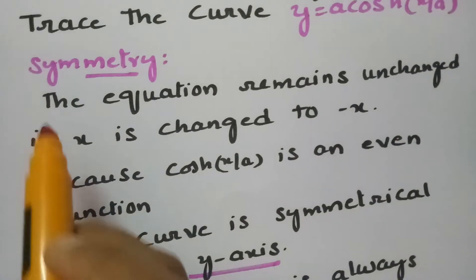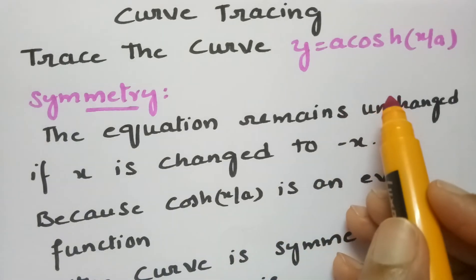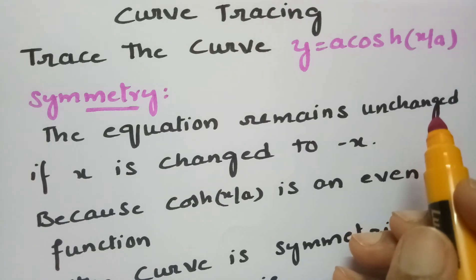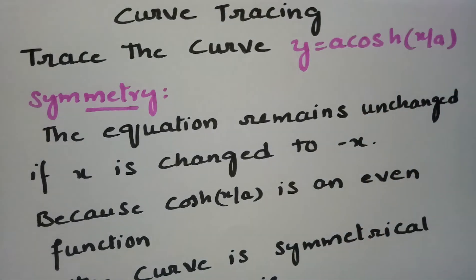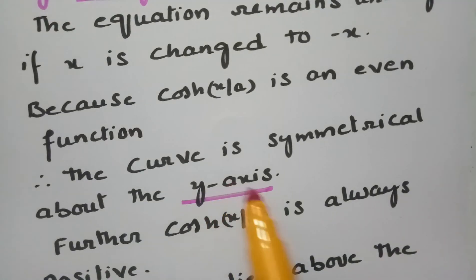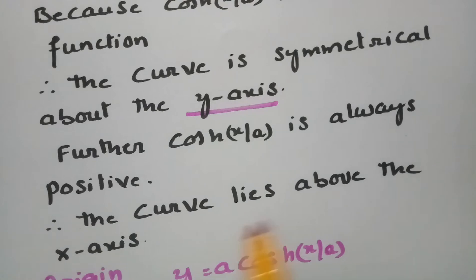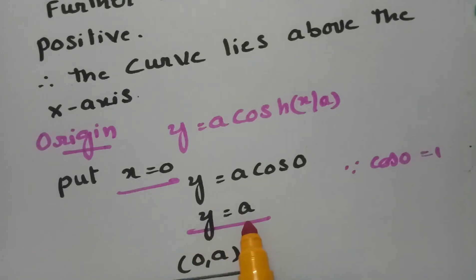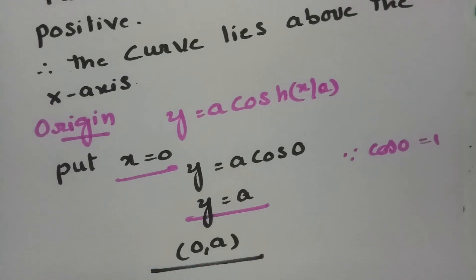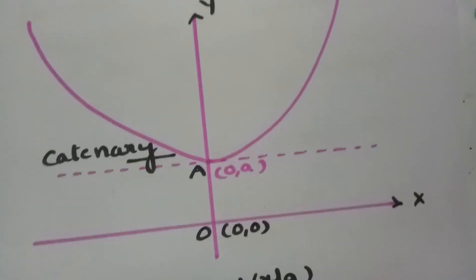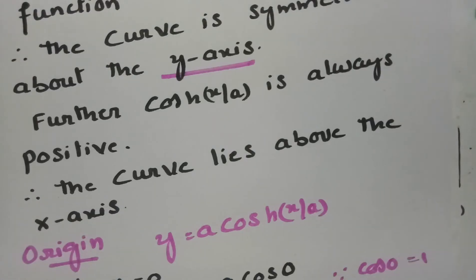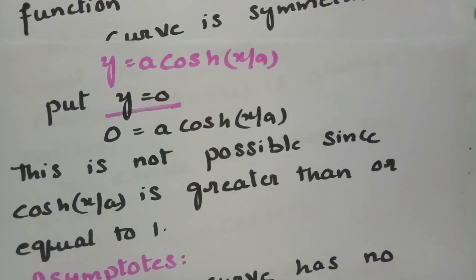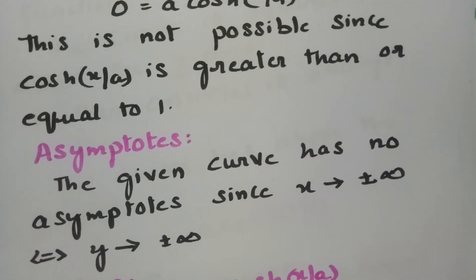To summarize: for symmetry, replacing x with −x leaves the equation unchanged because cosh(x/a) is an even function, so the curve is symmetric about the y-axis and lies above the x-axis. For the origin, putting x = 0 gives y = a, so (0, a) is on the curve. Putting y = 0 is not possible, so (0, a) is the only intercept point.